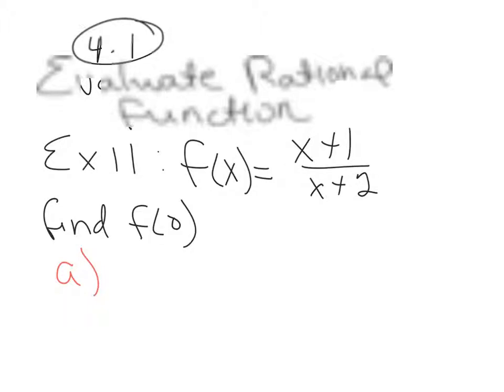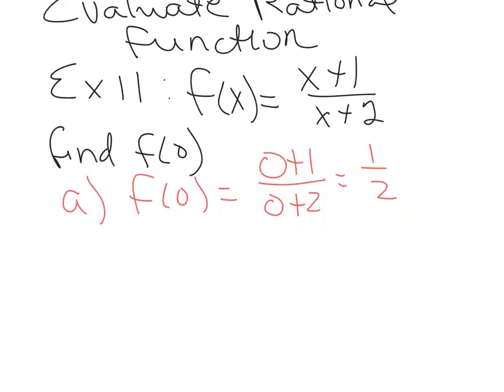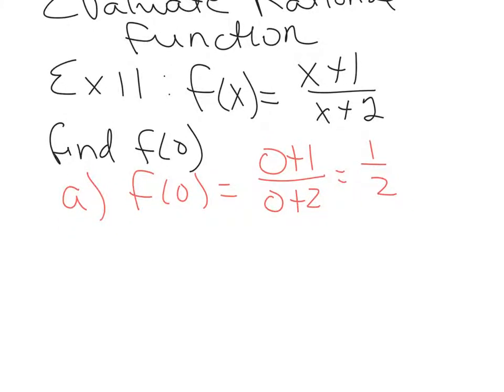So we write it like this: f(0) equals, not x+1, 0+1, not x+2, 0+2, and then we simplify. f(0) equals 1/2. That means that when x is 0, y is 1/2. I actually like it when students write this as an ordered pair: when x is 0, y is 1/2.